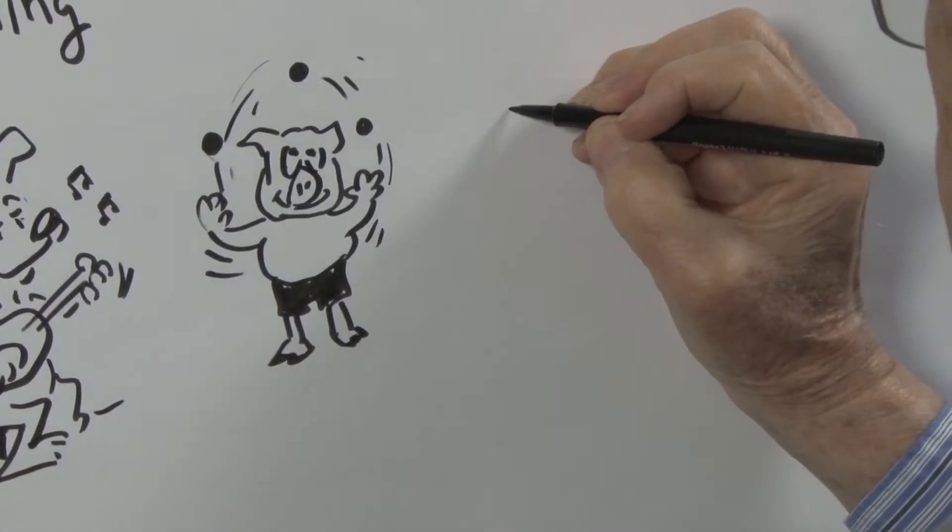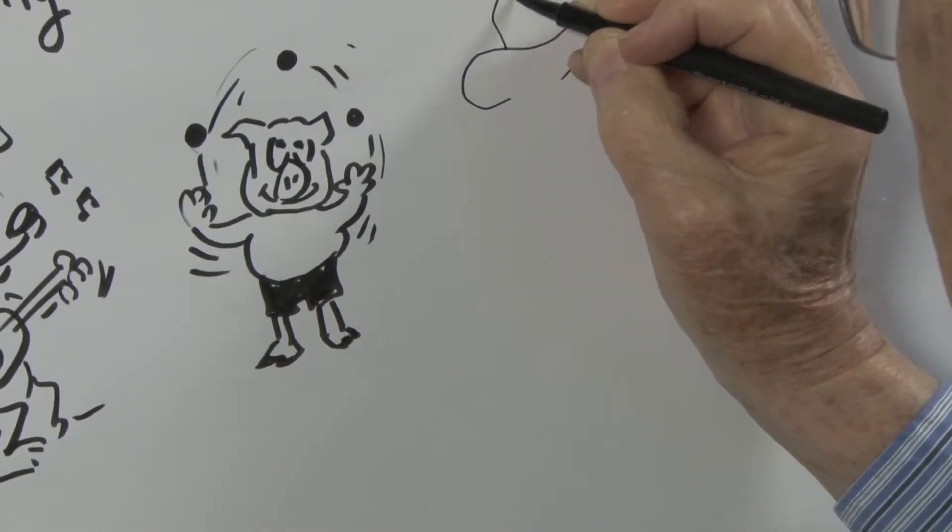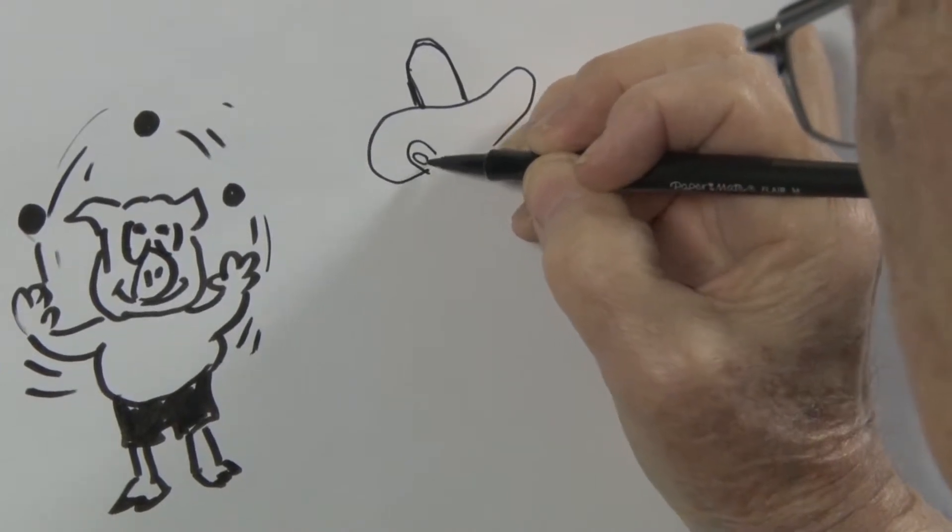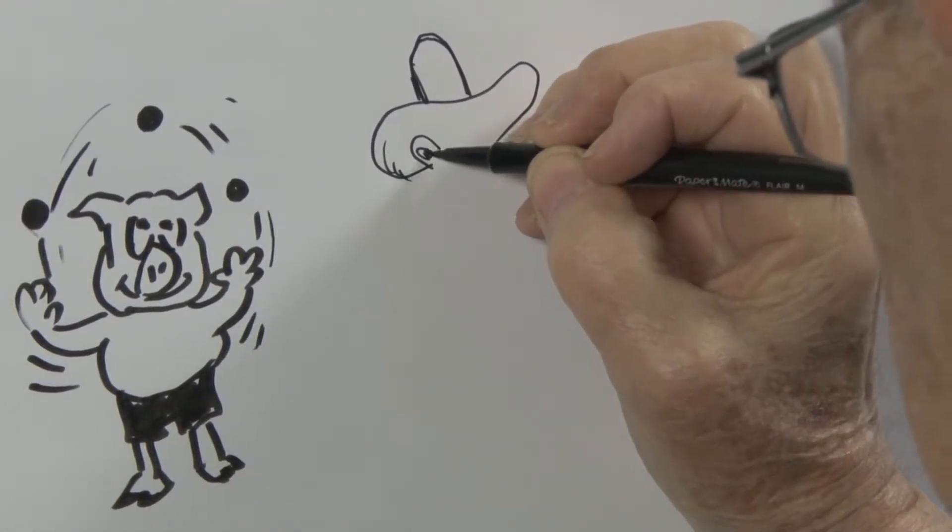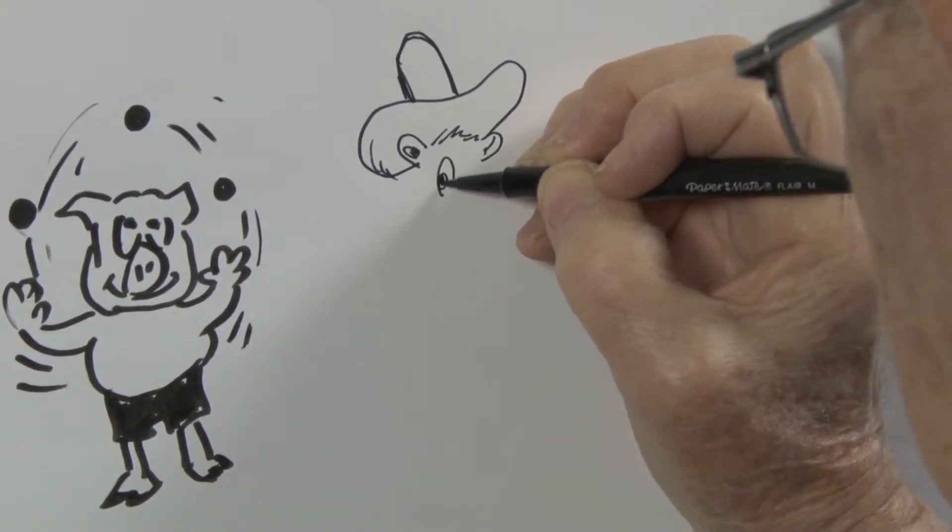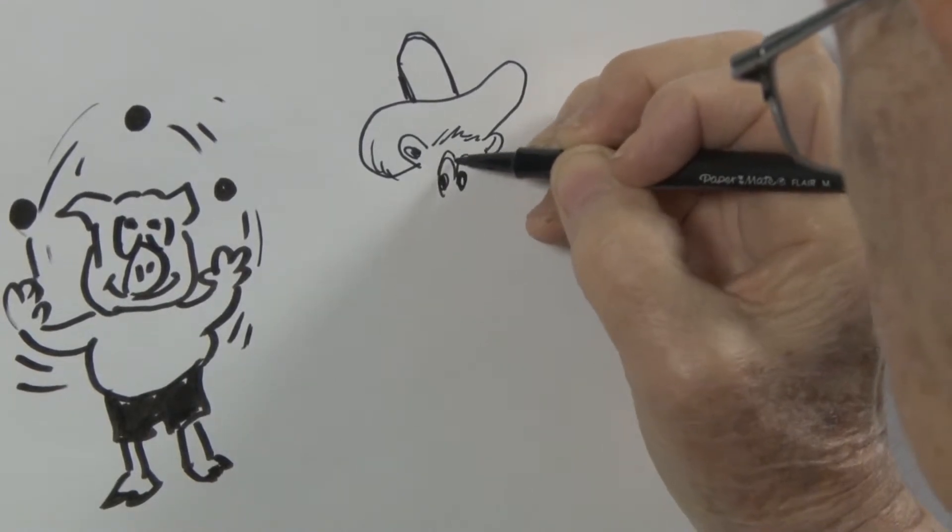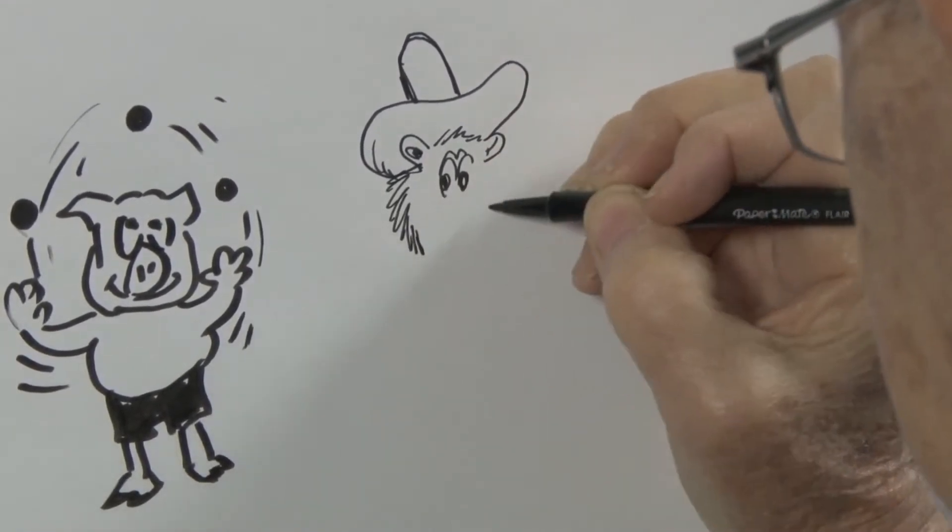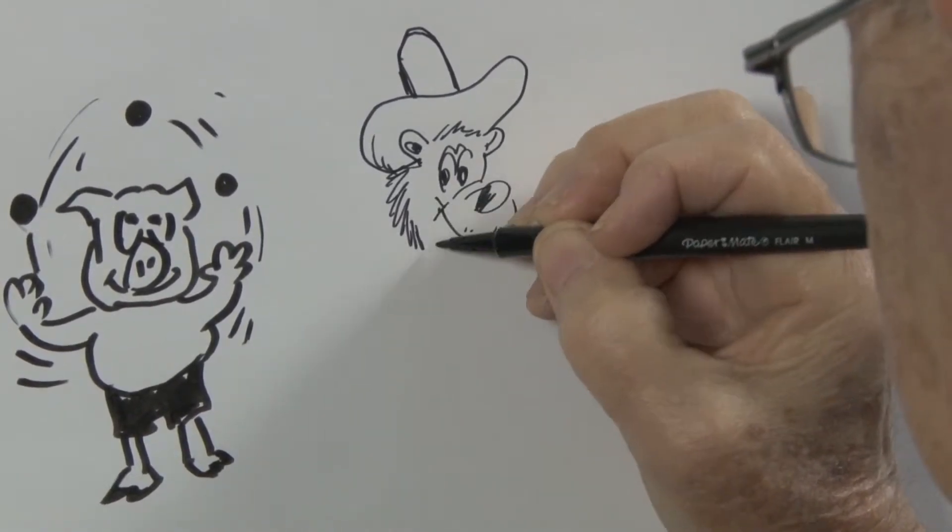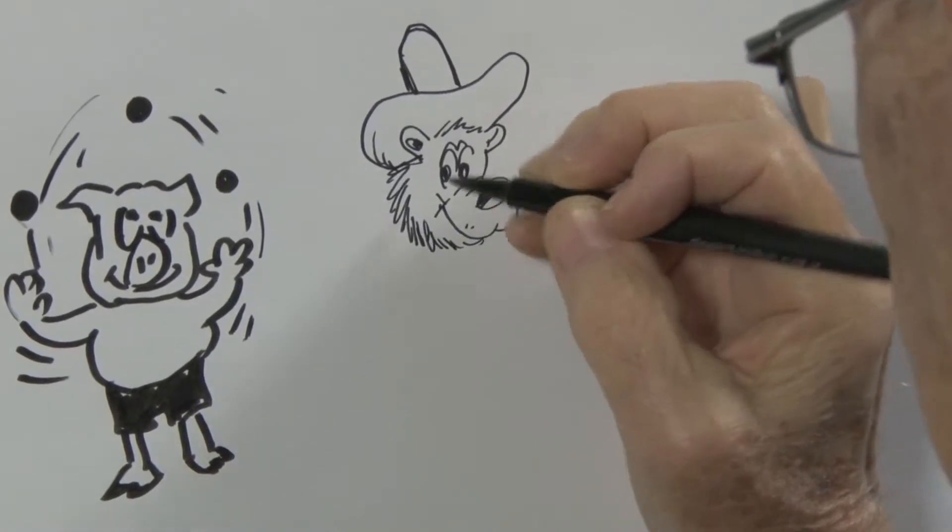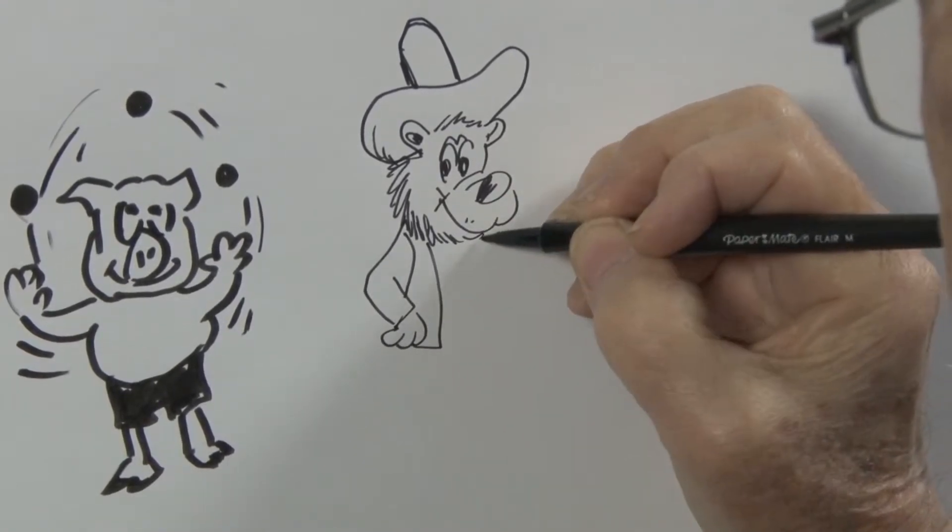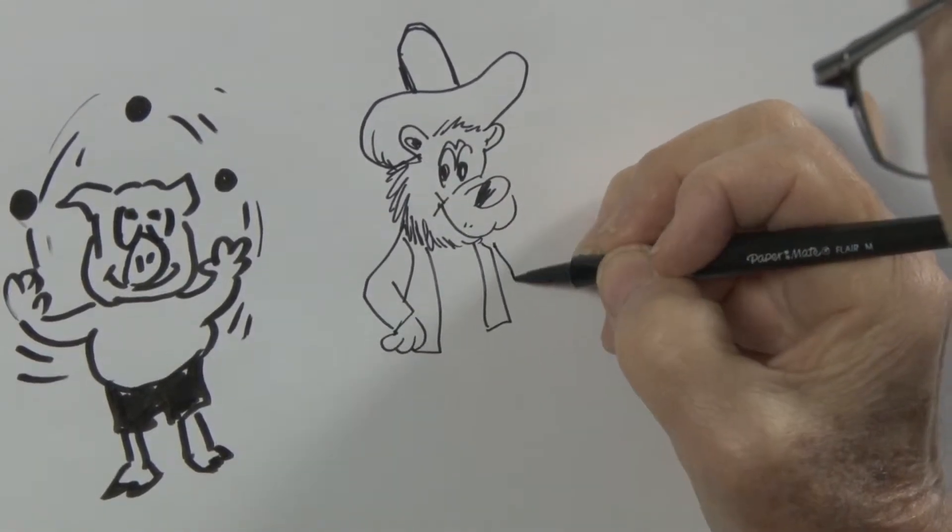Well, let's start with the headgear - a big old ten gallon hat. I've drawn the one ear there and the other one you can barely see. Looks like a happy cowboy.